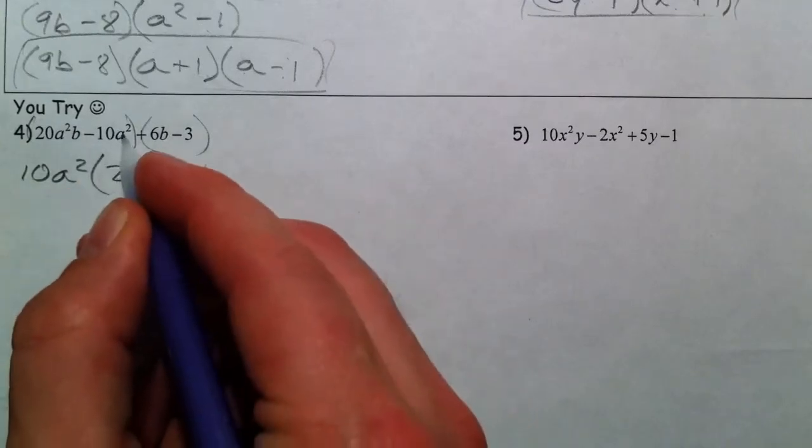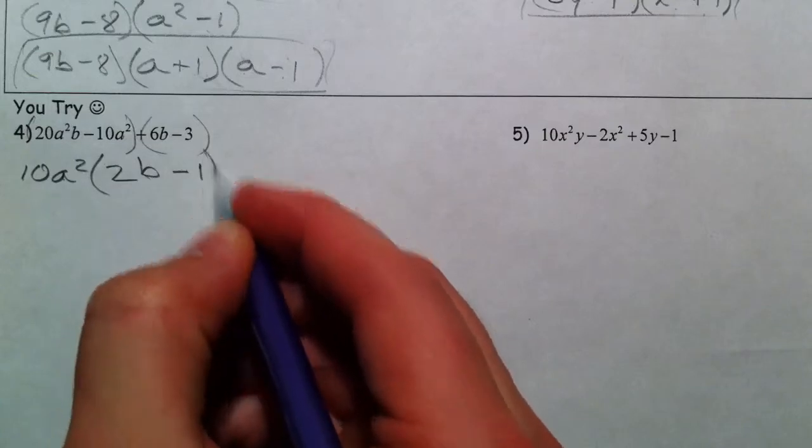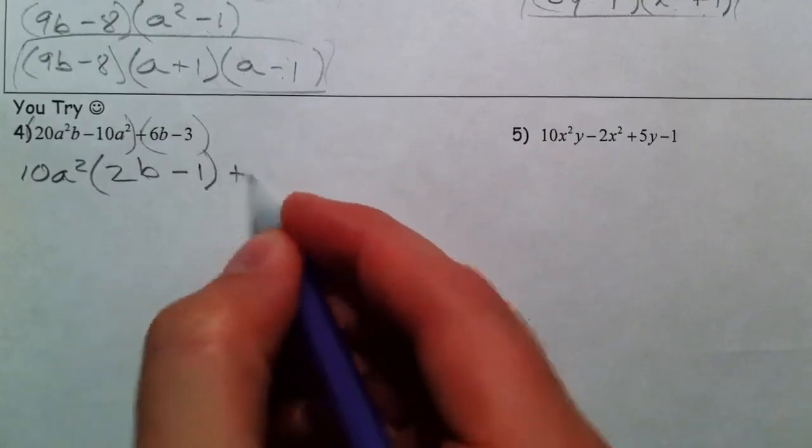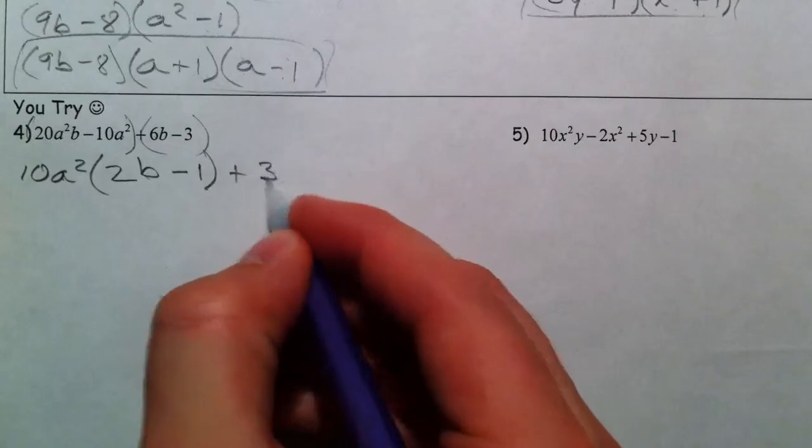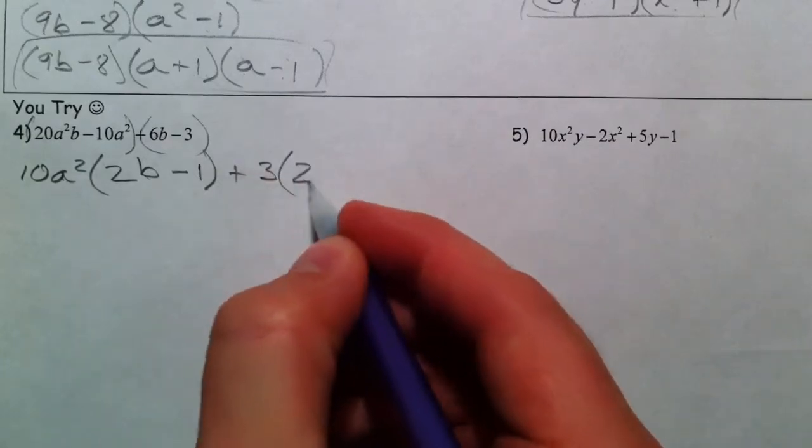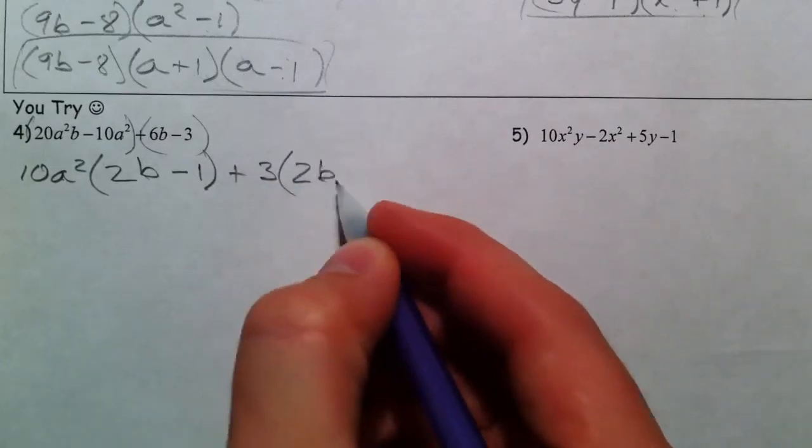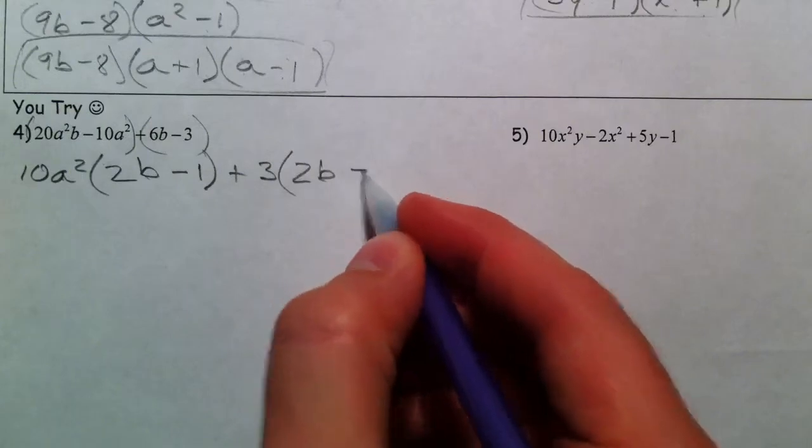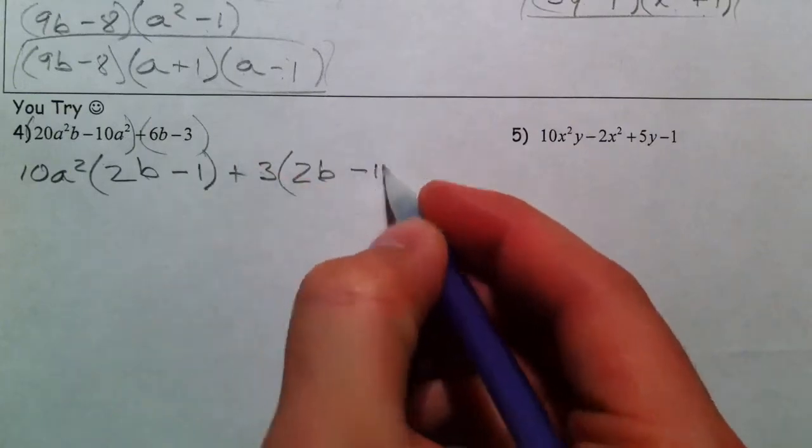The 10 is gone and the a squared is gone, so that leaves a 1. The second one, there's no b's in common, but they have a 3 in common. So that leaves, 6 divided by 3 is 2, leaves the b. And 3 divided by 3 is 1.